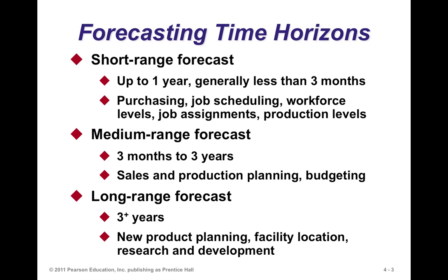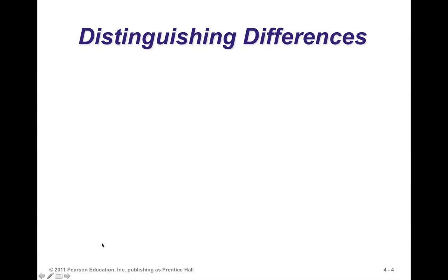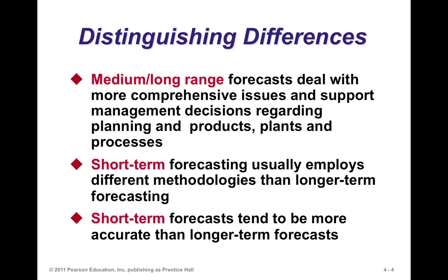Short-term forecasts tend to be associated with day-to-day, week-to-week, or month-to-month decisions, while long-range forecasts tend to be more strategic in nature. Medium to long-term forecasts deal with more comprehensive issues and support management decisions regarding planning, products, plants, and processes — things that remain for several years. For instance, if you locate a plant, you're not going to change its location monthly. Short-term forecasts usually employ different methodologies and tend to be more accurate than longer-term forecasts.